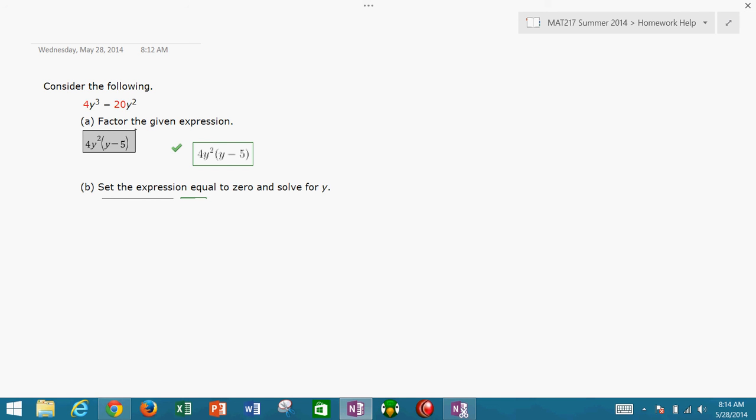So what they're saying is pretend the problem started like this: you had your 4y cubed minus 20y squared equals zero. Pretend it was set equal to zero.